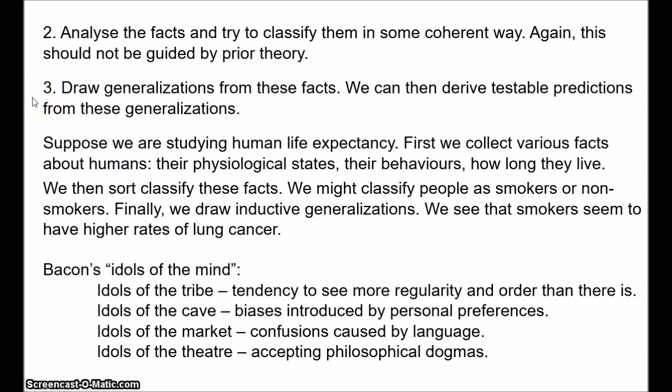Third, the idols of the market. These are confusions caused by the peculiarities and imprecisions of language. So think about the word bank. Well, this can refer to a financial institution or to the land alongside a river. This kind of obvious homophone is unlikely to cause confusion. But other words are more slippery. Words like love and energy are used in subtly different ways in different contexts. There's a difference between the love I have for my girlfriend and the love parents have for their children. Although there's also commonalities. And so if you're trying to study the nature of love, say, you are liable to be misled.